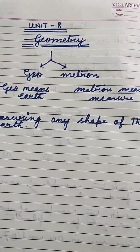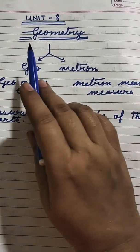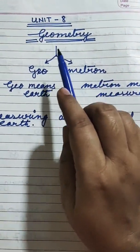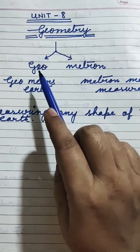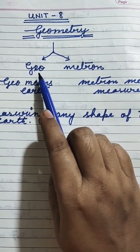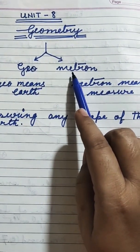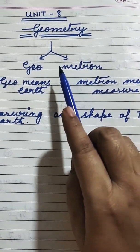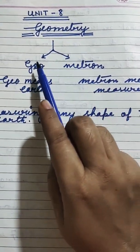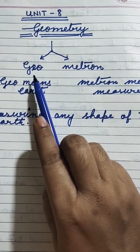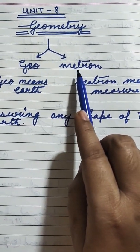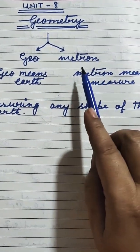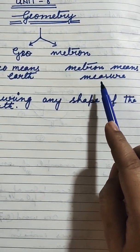Look at here — Geometry. See this word, Geometry. Geometry is made up of two words: number one, Geo, and number two, Metron. These are two Greek words. It is made up of two Greek words, Geo and Metron.